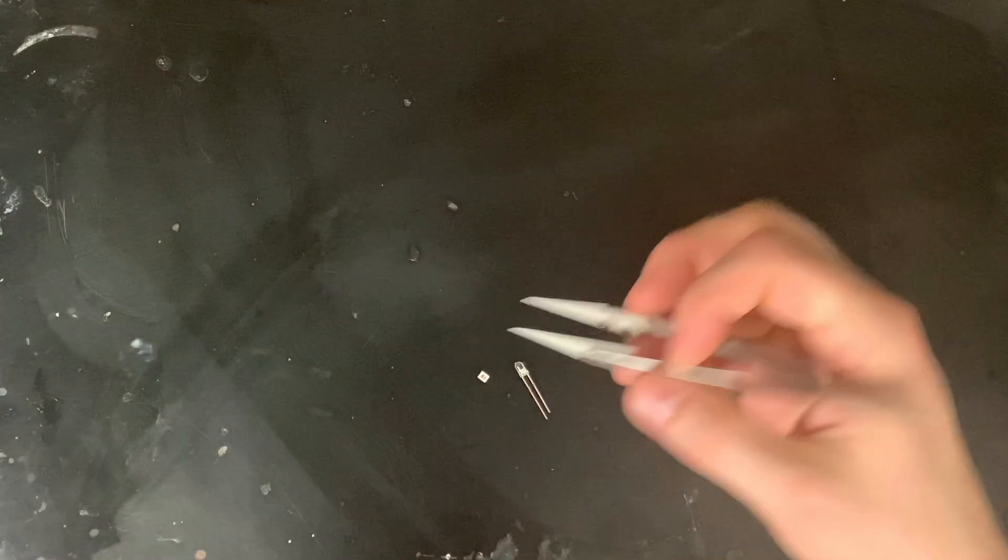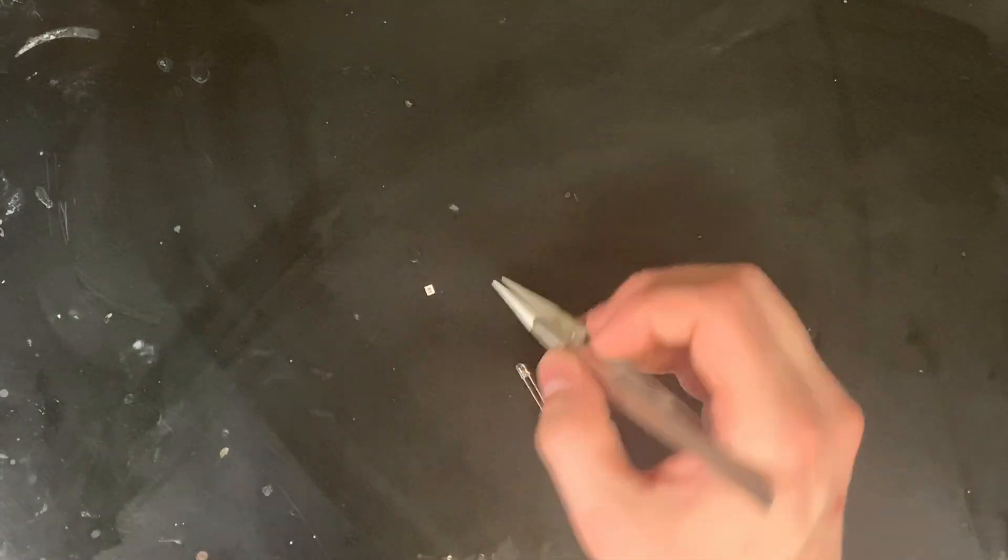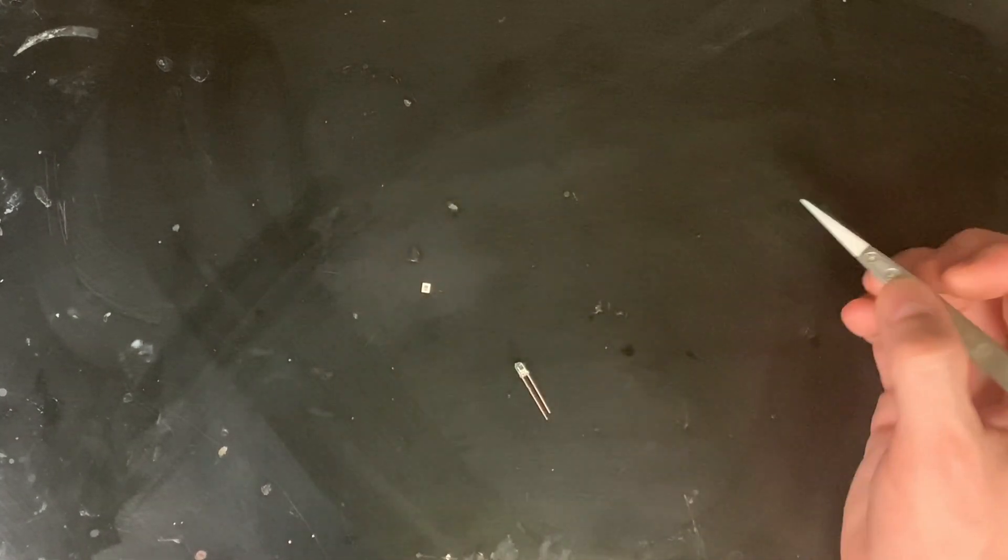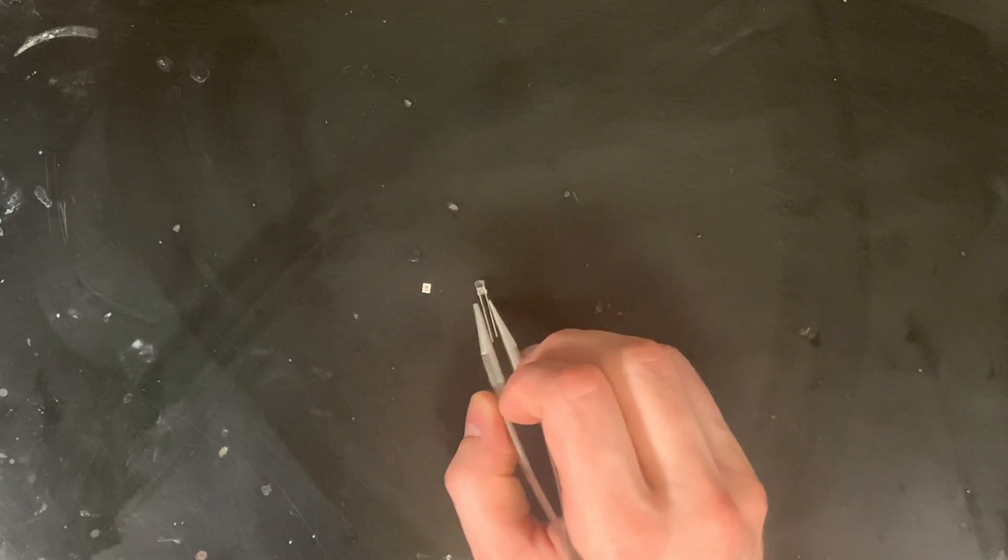So you're probably wondering, what does all this mean? Well, there's two basic technologies for soldering. There's surface mount, like this piece here, and then there's through-hole, like this piece here, or SMD or THT.